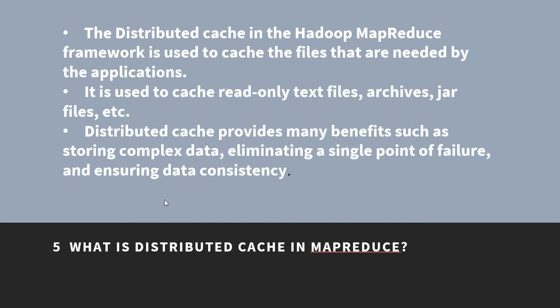What is distributed cache in MapReduce? The distributed cache in the MapReduce framework is used to cache files that are needed by the applications. It is used to cache read-only text files, archives, JAR files, etc. Distributed cache provides many benefits such as storing complex data, eliminating a single point of failure, and ensuring data consistency.